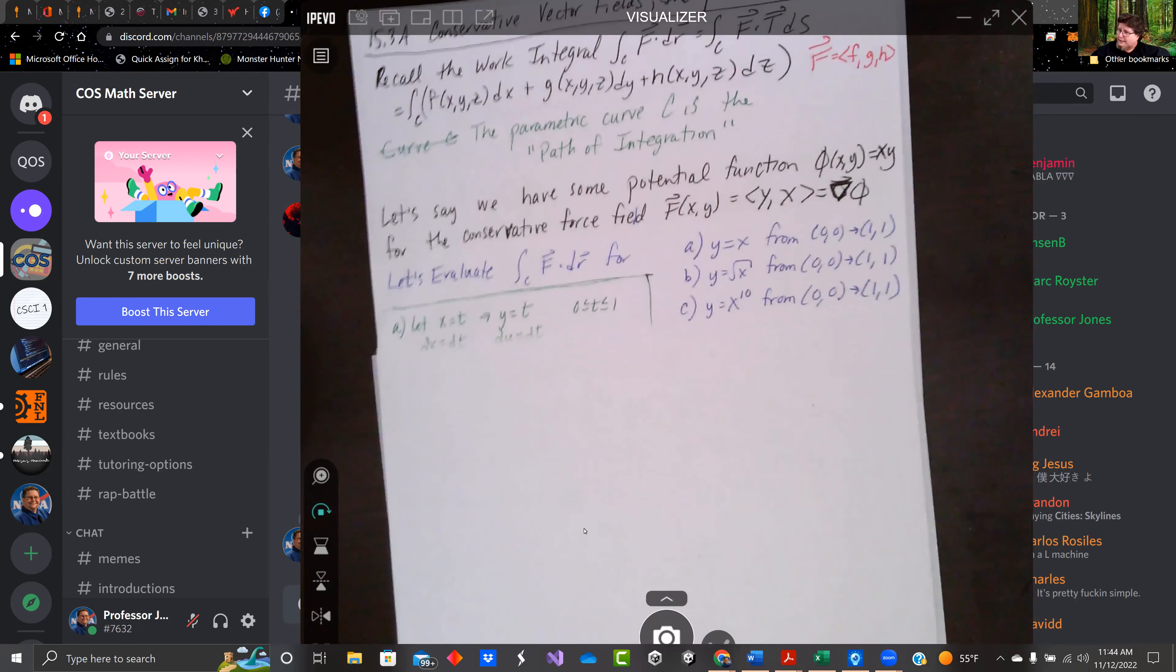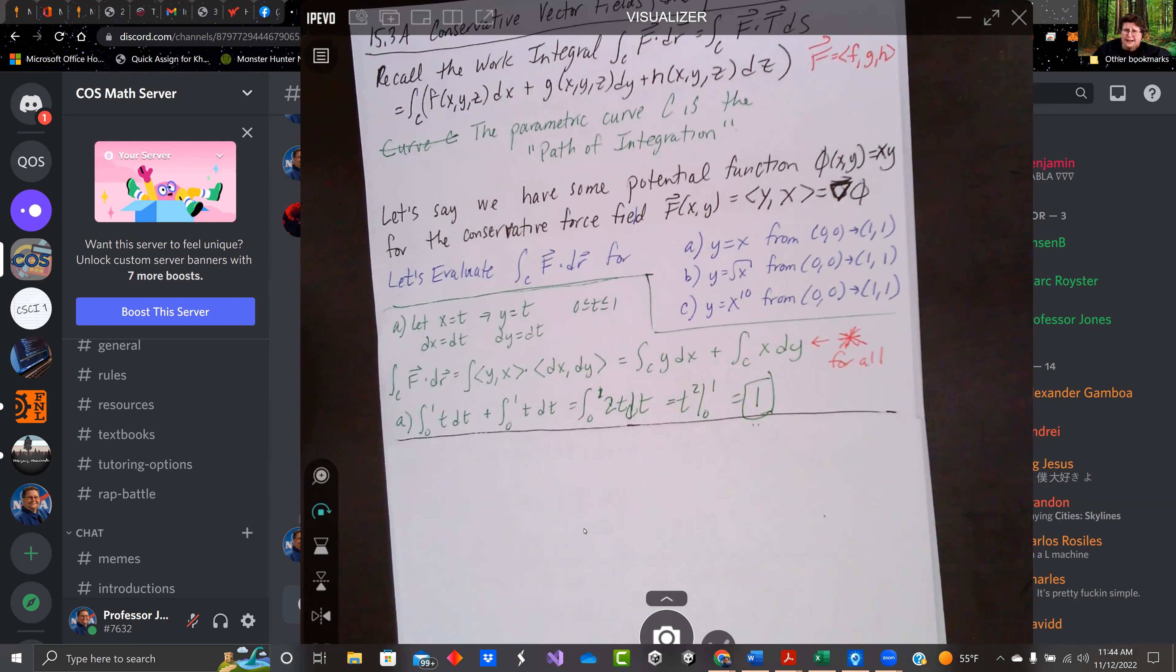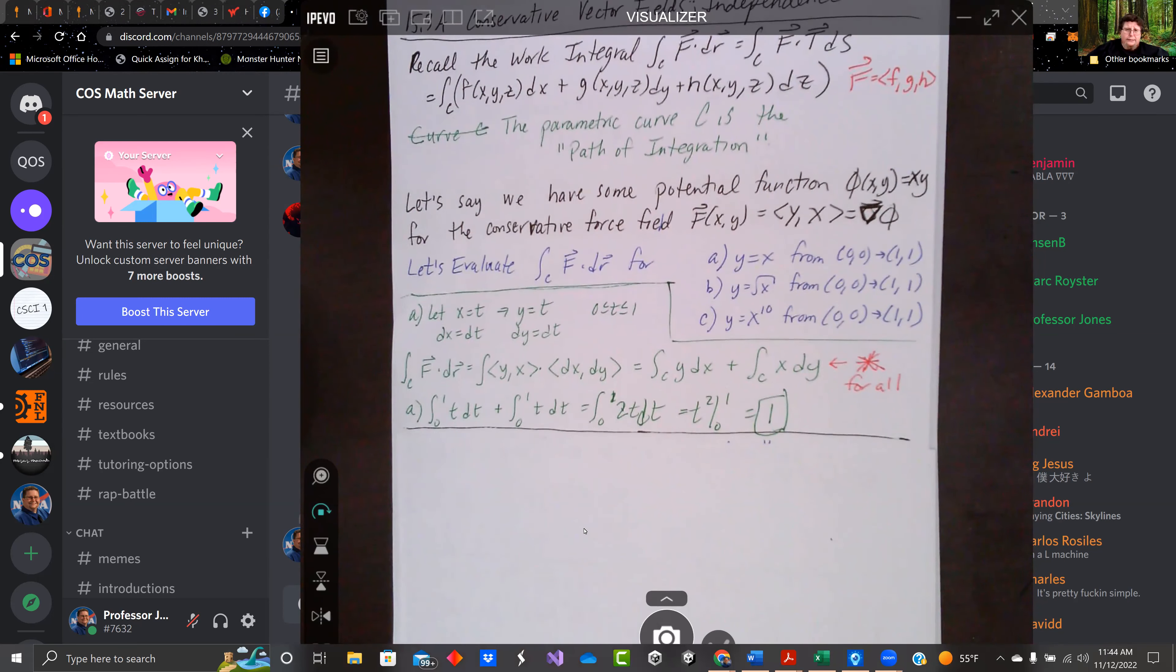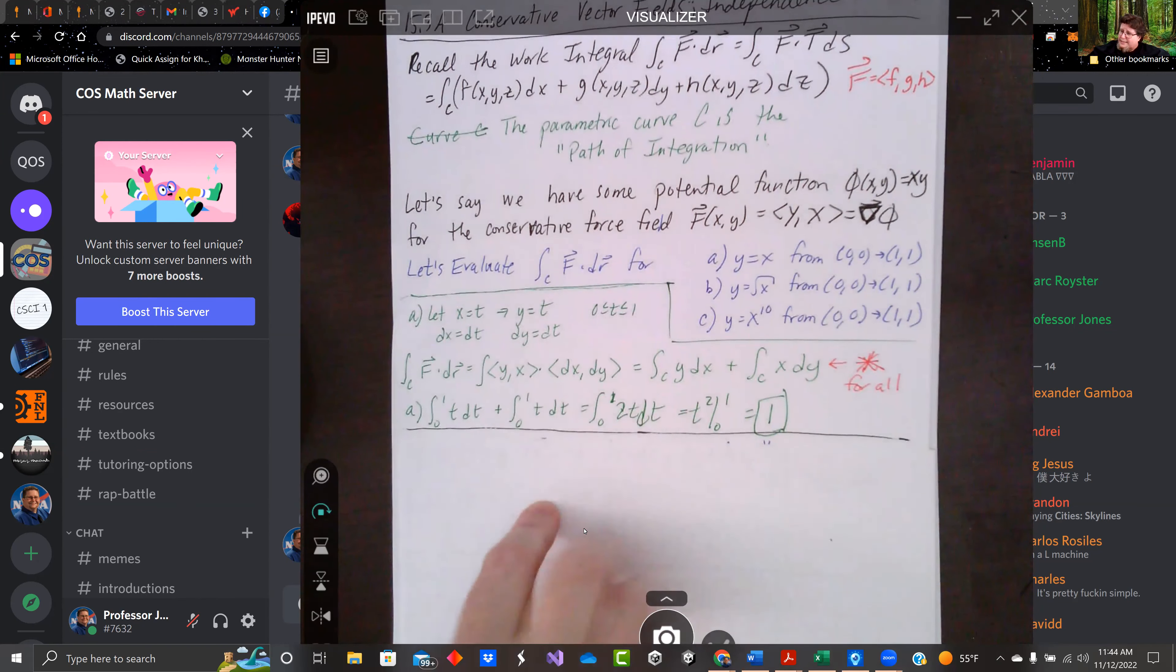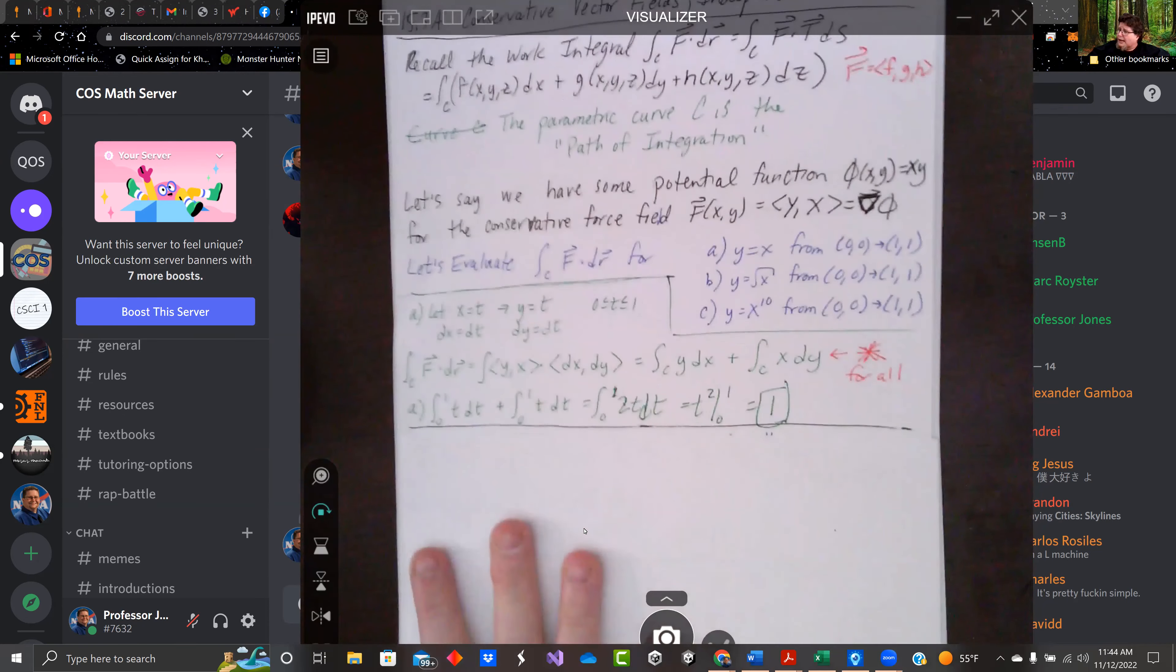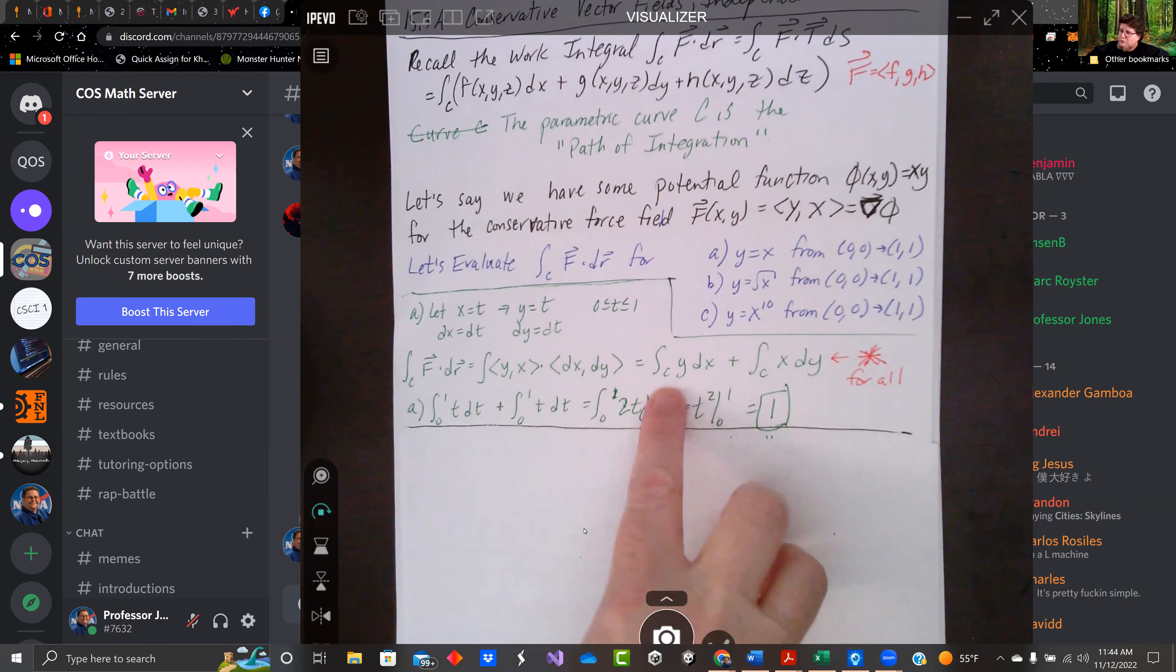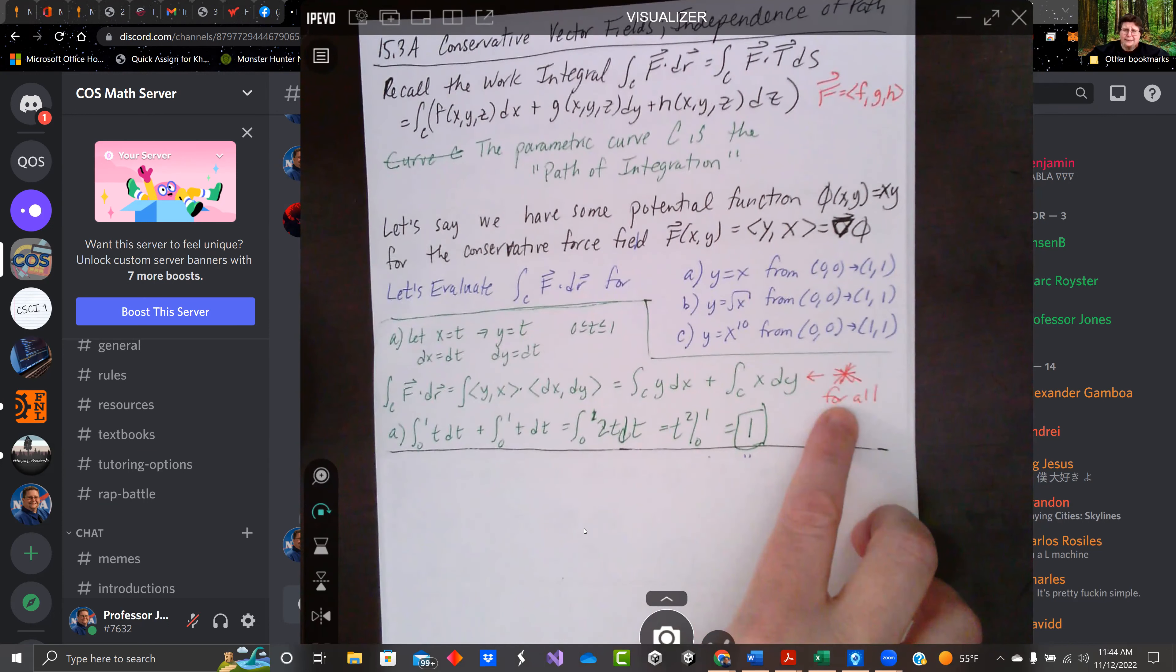So let's start with a. I'm going to let x equal t, which means y equals t. We're going from 0 to 1. So dx equals dt, and dy equals dt. So f dot dr is, we have our force vector y, x dot with dx, dy. So our line integral, and this will be the same for all three because we have not put in the path yet, along the curve will be y dx plus x dy.